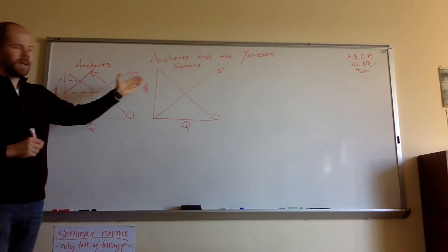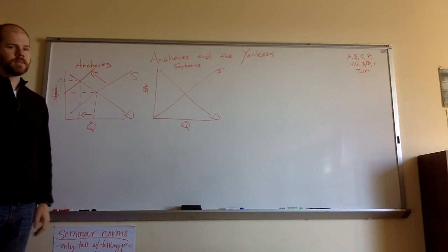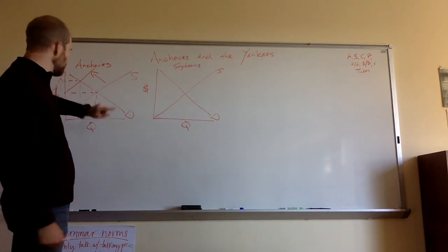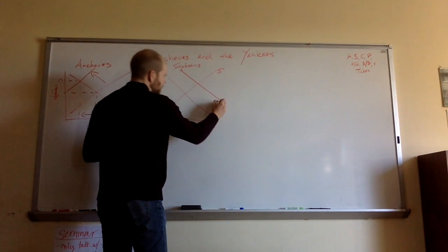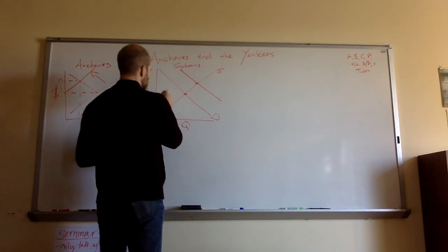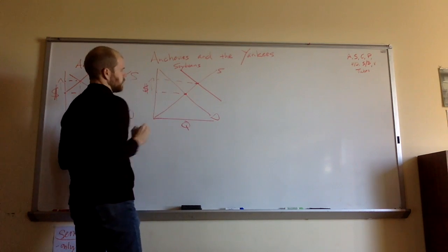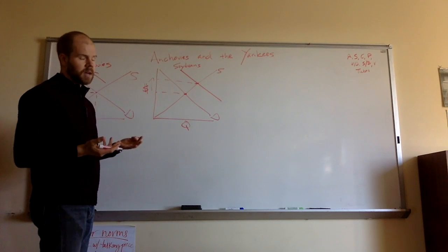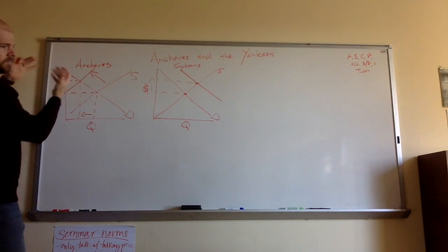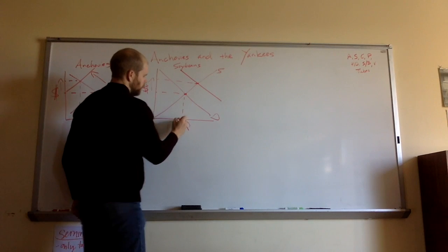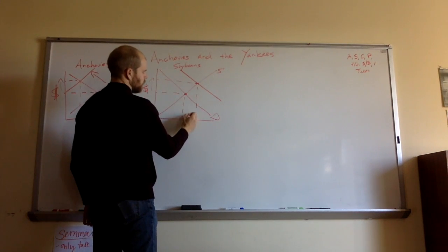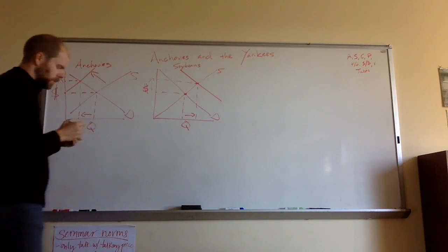One substitute got more expensive. What's going to happen to your demand for soybeans? The demand is going to increase — you're going to want more soybeans because they're cheaper than anchovies. Demand shifts, supply does not. The quantity supplied, however, does increase. This is actually going to increase the price of soybeans too. We know that now fertilizer is going to be expensive whether you're using soybeans or anchovies, because a disaster happened in the market. Less people are purchasing the more expensive anchovies, so more people buy soybeans — quantity increases and price goes up.